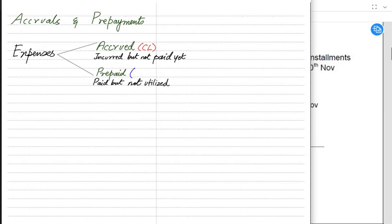The opposite of an accrued expense is a prepaid expense. These are expenses paid but not yet utilized — we have paid the money in advance but haven't taken the service yet. The services will be received in the future, so a prepaid expense is a current asset for the business.